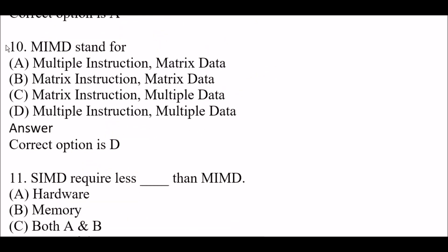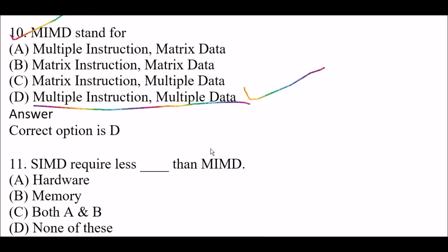Next question: MIMD stands for — option A, multiple instructions, matrix data; option B, matrix instructions, matrix data; option C, matrix instructions, multiple data; option D, multiple instructions, multiple data. The right answer is option D, multiple instructions, multiple data.